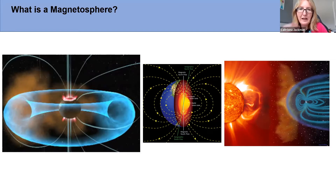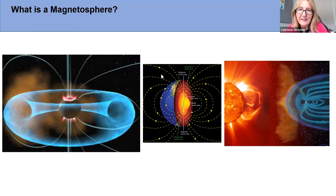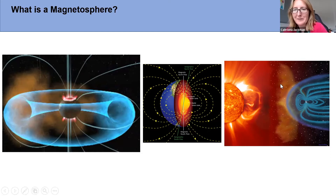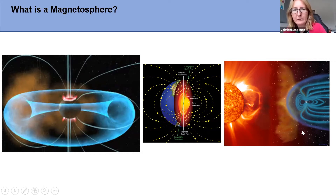At the core — literally — magnetospheres, certainly for Earth, involve dynamo action producing the magnetic field, which invisibly stretches large distances out into space. This picture again reminds us of where these magnetospheres lie and their relationship to the sun.